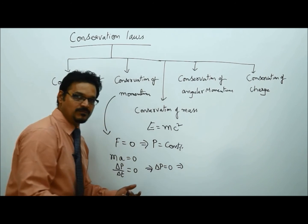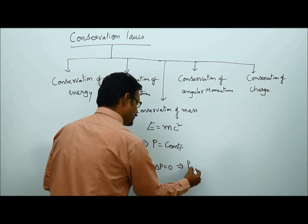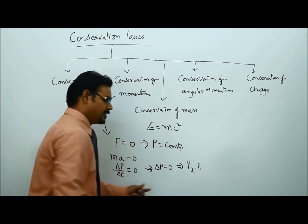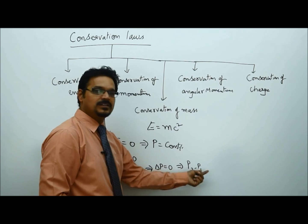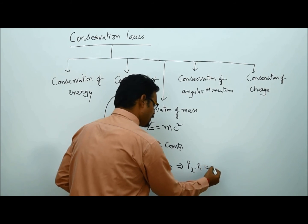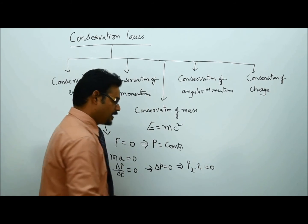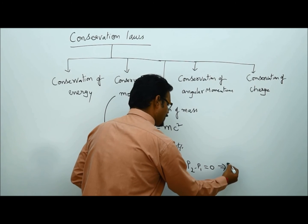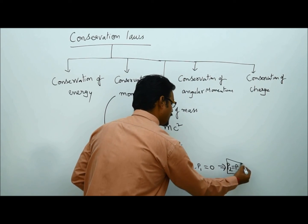And you know that delta P is nothing but change in momentum, which is P2 minus P1, final momentum minus initial momentum, which is equals to zero. Then implies you can write P2 equals P1.